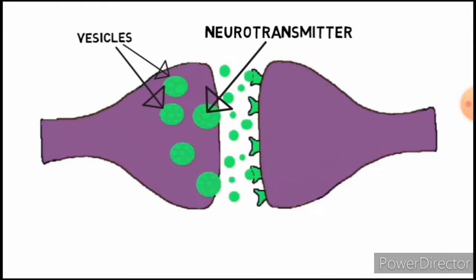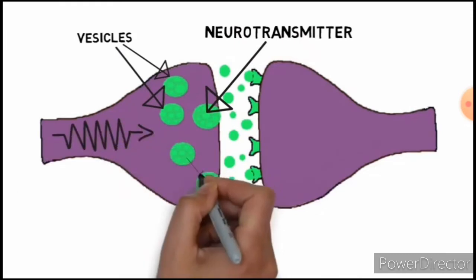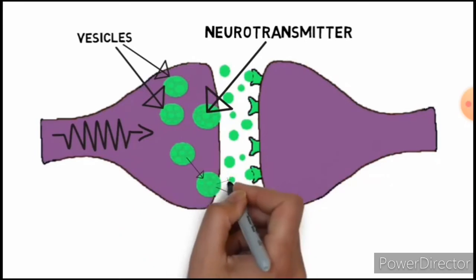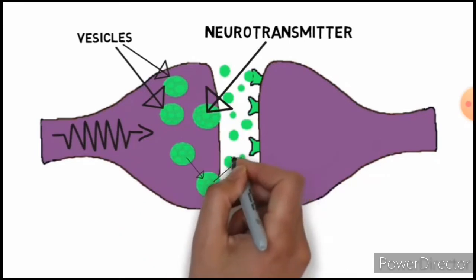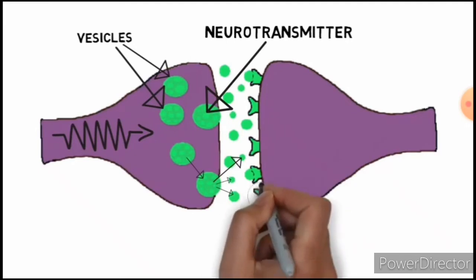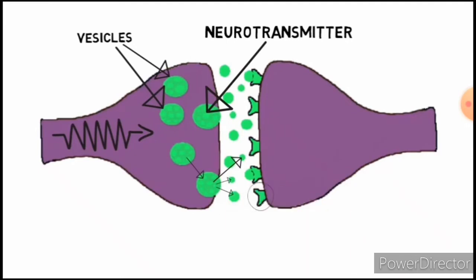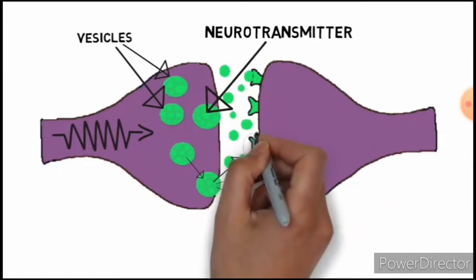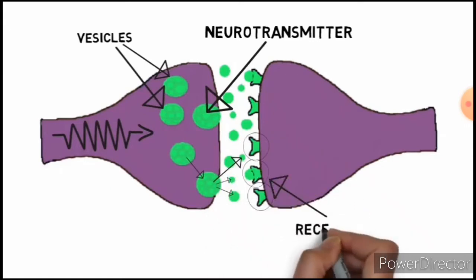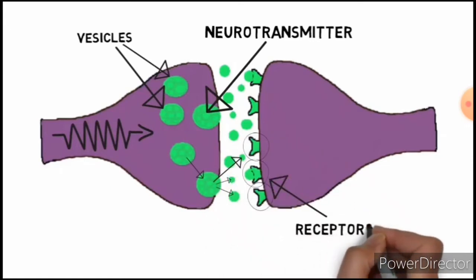When the presynaptic neuron is excited by an electrical signal called an action potential, this causes the vesicles to fuse with the presynaptic membrane and release their contents into the synaptic cleft. Once they are in the synaptic cleft, neurotransmitters interact with receptors on the postsynaptic membrane. They bind to these receptors and can cause an action to occur in the postsynaptic cell as a result.